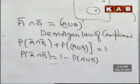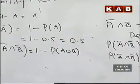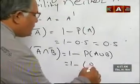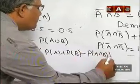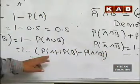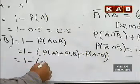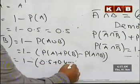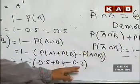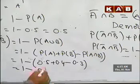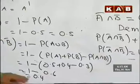So you get 1 minus probability of A union B. Probability of A union B is based on the addition theorem of probability: probability of A plus probability of B minus probability of A intersection B. This gives 1 minus (0.5 + 0.4 − 0.3), which is 1 minus 0.6, equal to 0.4. So probability of A bar intersection B bar is 0.4.